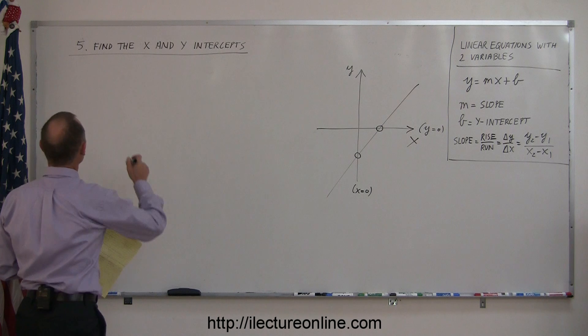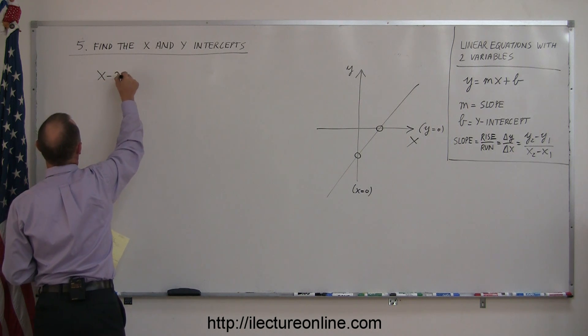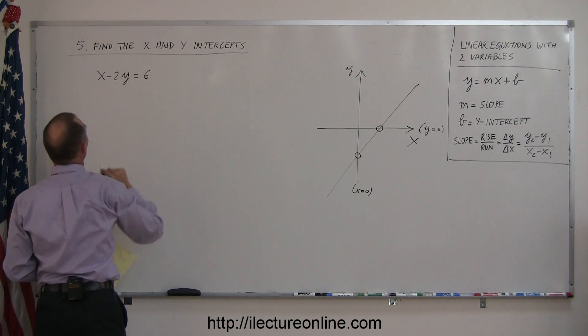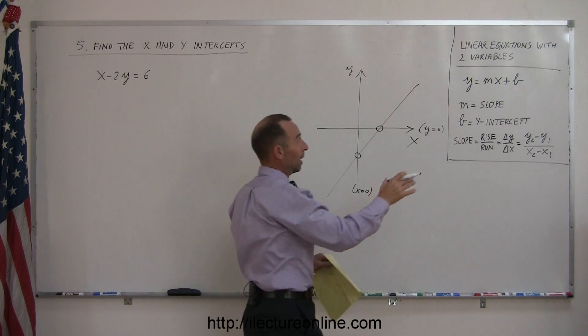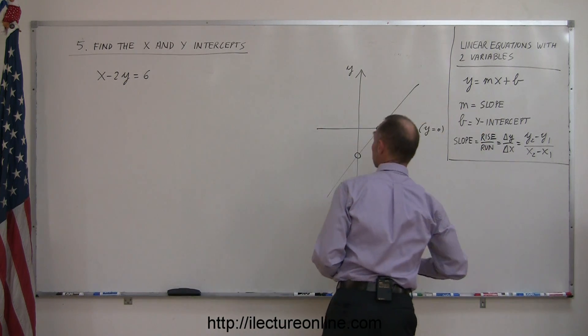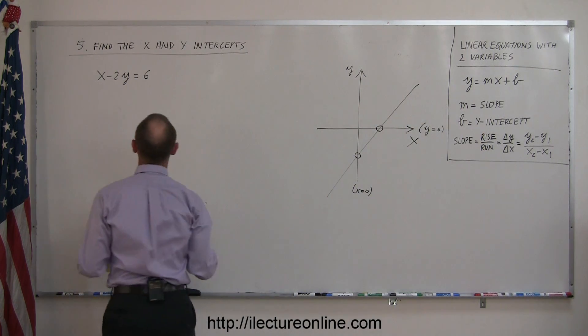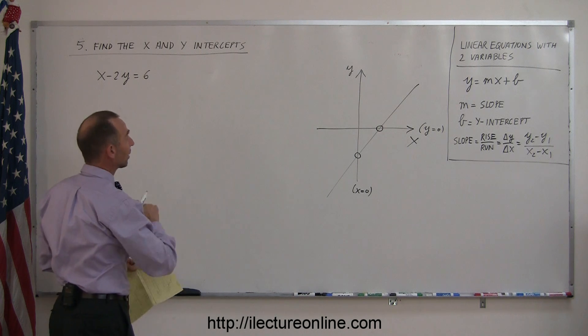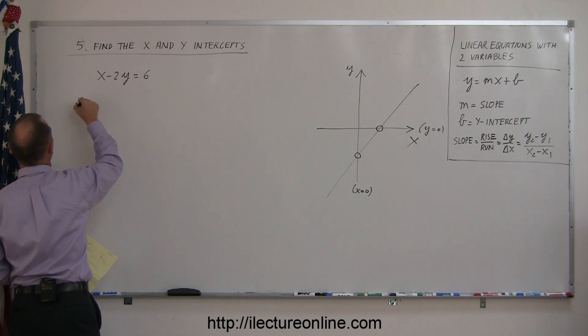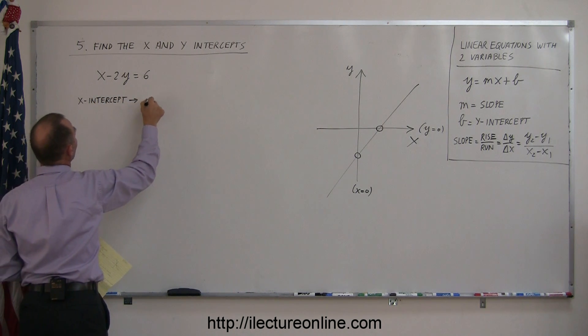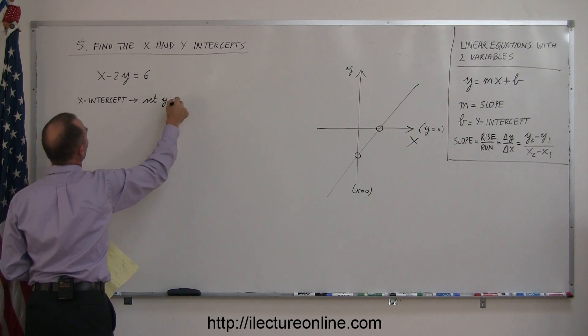How about x minus 2y equals 6? Now, we do not have to write in this format. We could, but we don't have to. Here we can simply say, alright, I'm going to find the x-intercept, which means I'm going to set the y equal to zero.